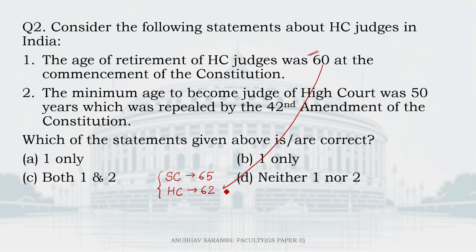Originally, at the commencement of the constitution, the age of retirement of High Court judges was 60 years. It was increased to 62 through the 15th Amendment Act of 1963. So statement 1 is absolutely correct. Regarding statement 2, there is no minimum age criteria now, nor was there one at commencement. There has never been a minimum age criteria for superior court judges — High Court or Supreme Court judges.